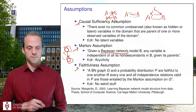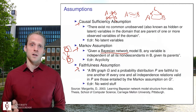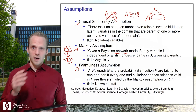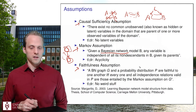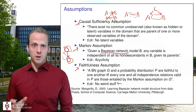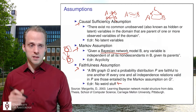The last assumption is the faithfulness assumption, which is a little harder to understand. Basically it means that the conditional independencies you obtain are in line with the graph model — I would translate it as simply 'no weird stuff.' It means the independencies in the data should genuinely reflect the graph structure, not arise accidentally from parameter values.